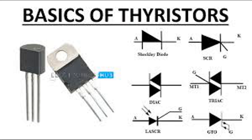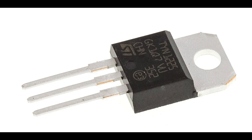Summary of operation states: Forward blocking mode — off state, high impedance, J2 is reverse biased, no current flow. Forward conducting mode — on state, low impedance, J2 is forward biased after gate triggering, current flows. Reverse blocking mode — high impedance, J1 and J3 are reverse biased, no current flow. By understanding these operating principles, one can effectively use thyristors in various applications requiring controlled switching and power regulation.